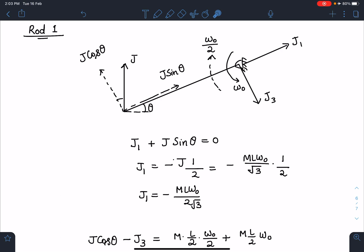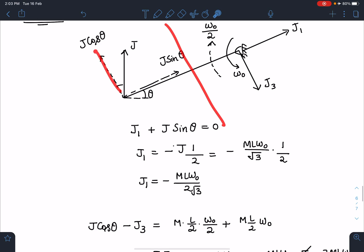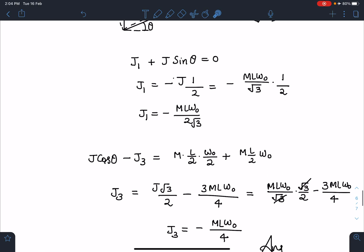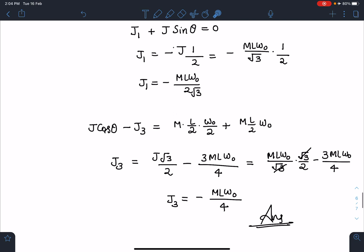Similarly, along perpendicular to the length of the rod, I can write J cos theta minus J3 equals p final minus p initial. That is m times VCM final - VCM final is going to be L by 2 and final omega is 2 - minus of minus m L times omega naught by 2. When I simplify this, I am going to get this J3 as minus ML omega naught by 4. This is the final answer.